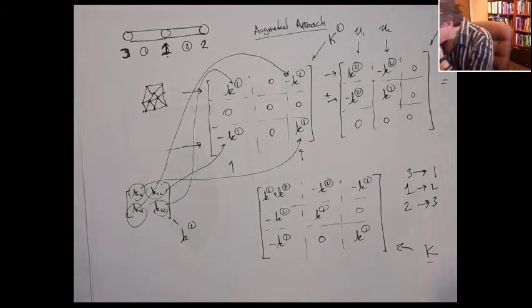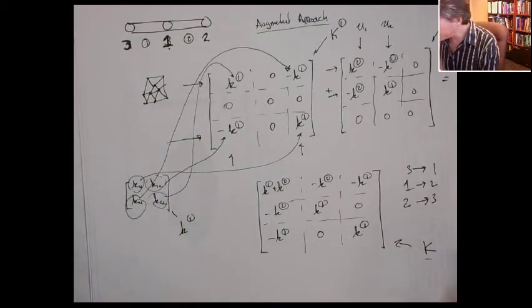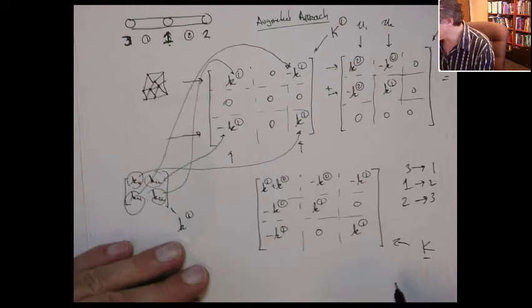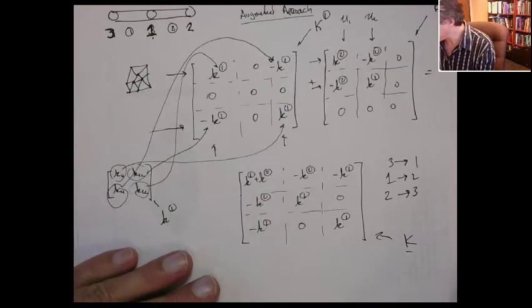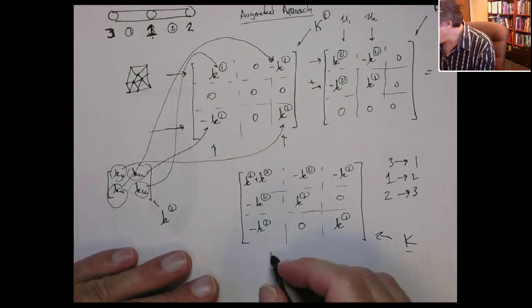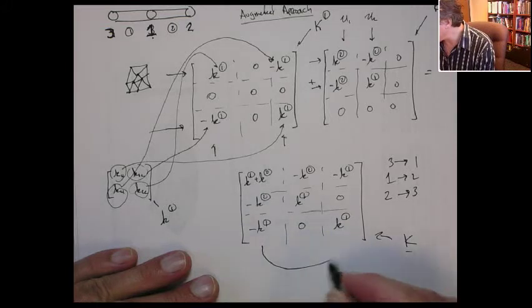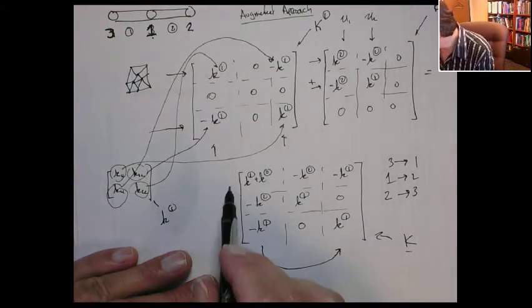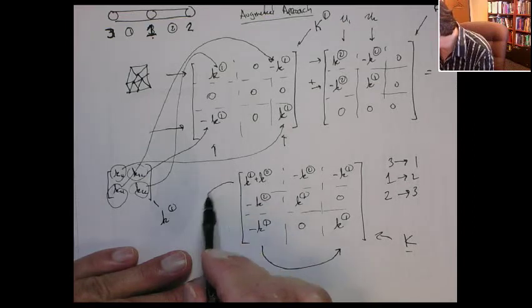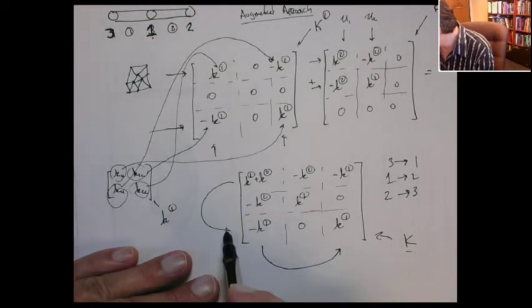So if you look at doing this, let's take column three and make it become column one, and likewise we're going to take row three and make it become row one.